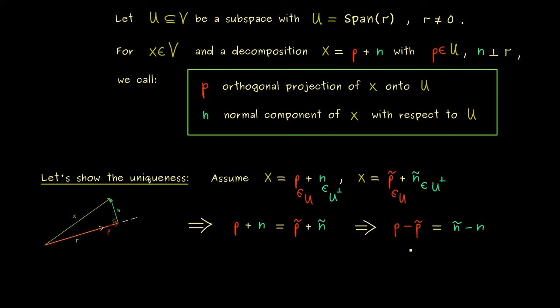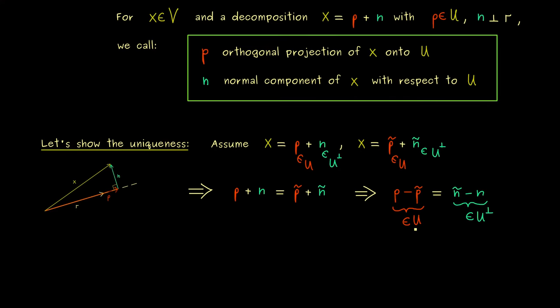And now in the next step we can put the colors together, so let's write p - p̃ = ñ - n. And at this point you should recognize that we have two different subspaces on left and right. So p - p̃ is definitely an element in U, since p and p̃ are in U. And since U is a subspace, we cannot leave this subspace by linear combinations. And the same on the right-hand side with U perp: you can just check that ñ - n is still orthogonal to r. This simply holds because of the linear property of the inner product.